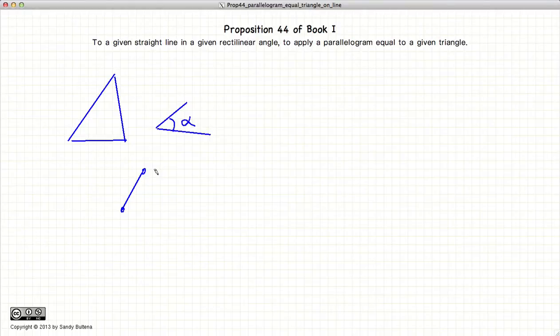And this proposition describes how to construct a parallelogram on the line segment that contains the angle that we've already defined and is equal in area to the original triangle.